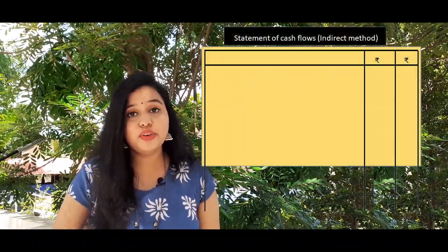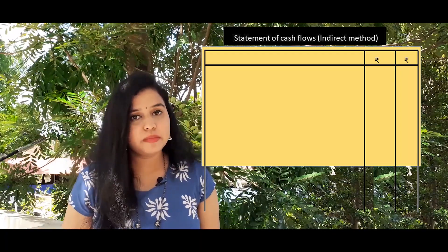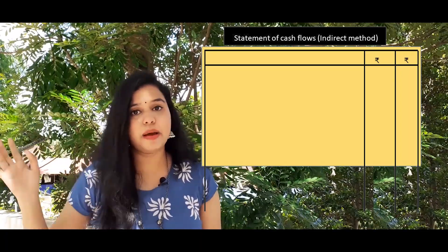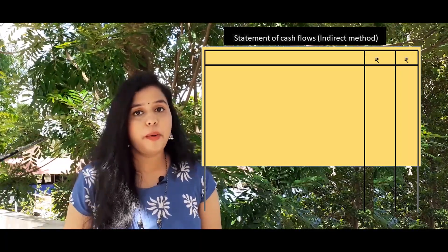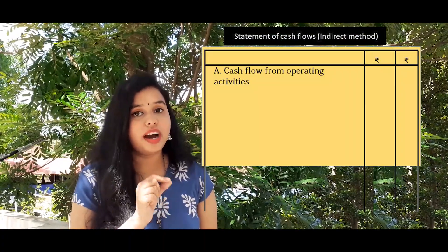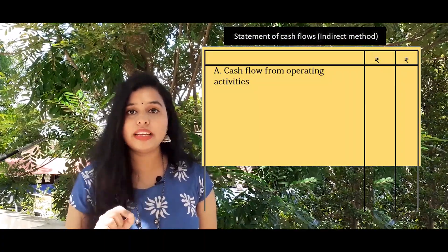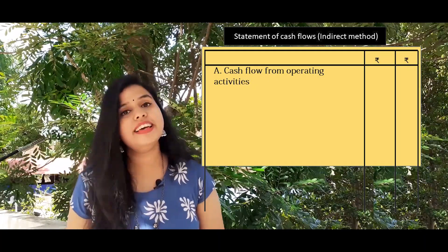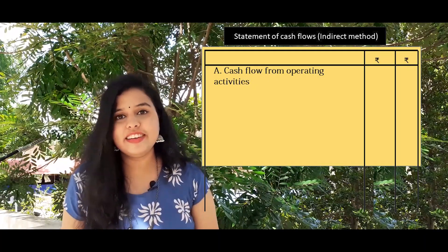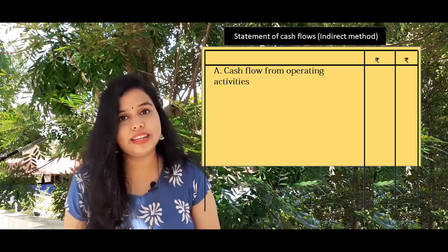Now let's go to the format. The heading is Statement of Cash Flow — indirect method — with a table of particulars and amount. We have to add the particulars from operating activities, heading to the label, and add the details for each.